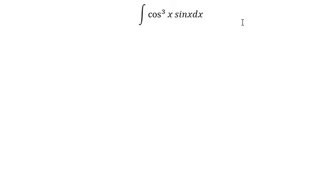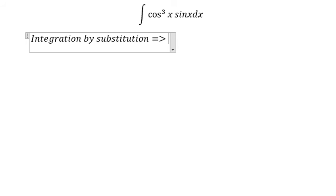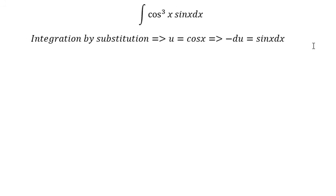In here we have u equals to cosine x, du equals to negative sine x dx. Because we don't have the negative in here, so we put the negative next to the du.